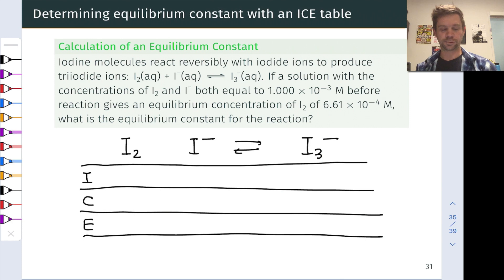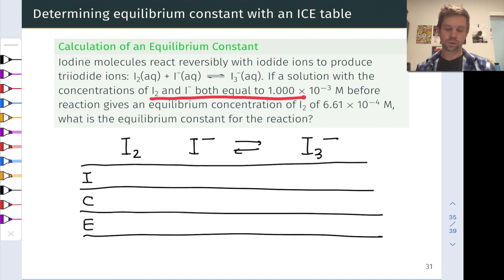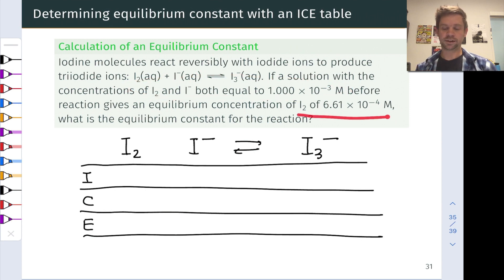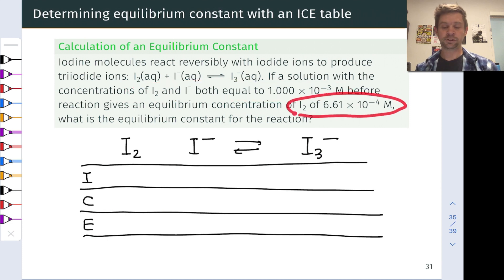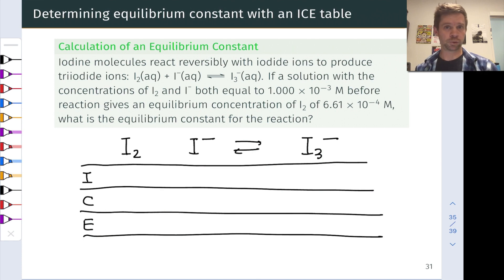We've got a balanced chemical equation for the reaction of I₂ with iodide to produce the triiodide anion. We've got a solution that starts out with initial concentrations of I₂ and I⁻, and we know the equilibrium concentration of I₂. What we want to know is the equilibrium constant for the reaction. This is an ICE table problem — we've got complete information about the initial conditions and incomplete information about the equilibrium situation, so we can't just plug equilibrium concentrations directly into the equilibrium equation. We've got to figure out the missing equilibrium concentrations, specifically of I₃⁻ and I⁻.